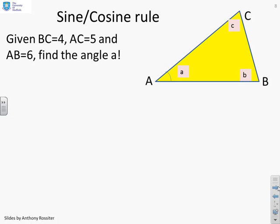So then, here's a question. Given that BC equals 4, so I'll write that down there. AC equals 5, I'll write that down there. And AB equals 6, I'll write down that on there. Find this angle.